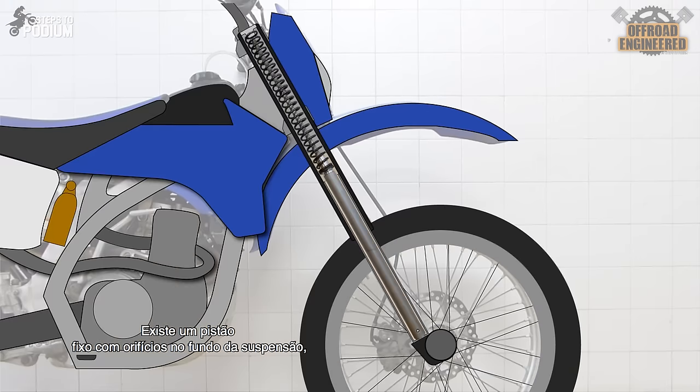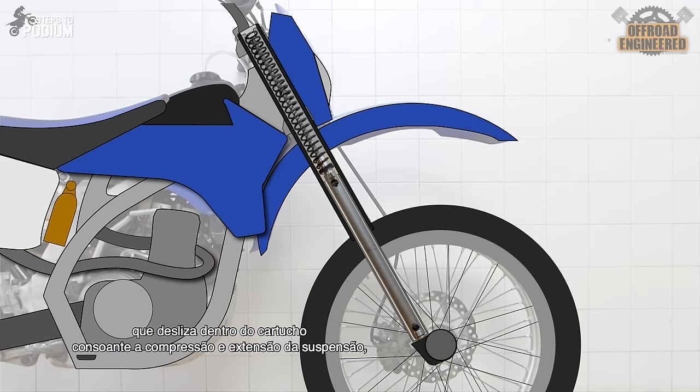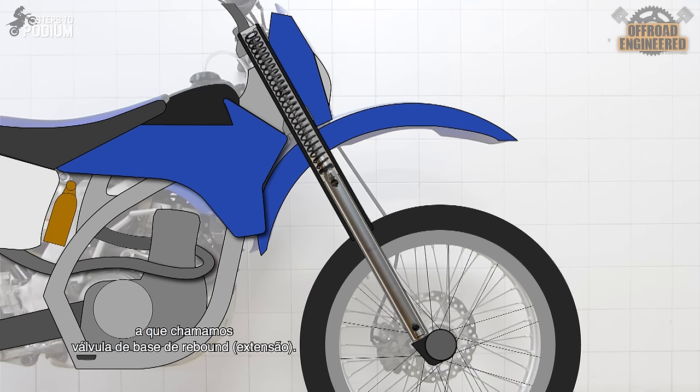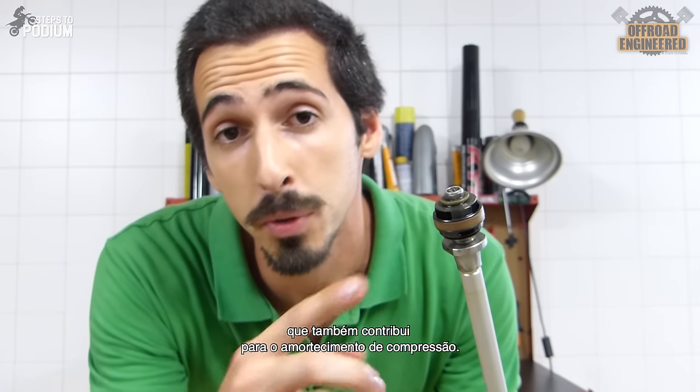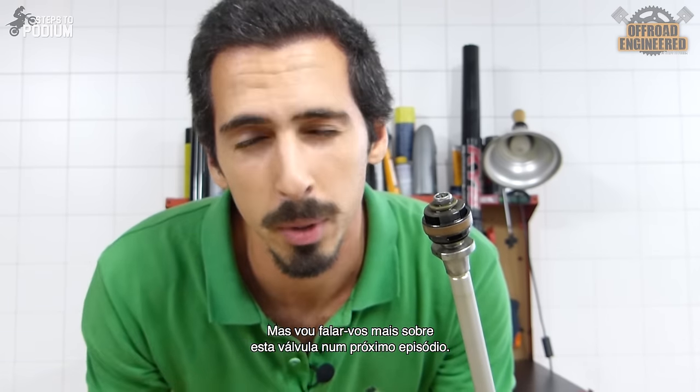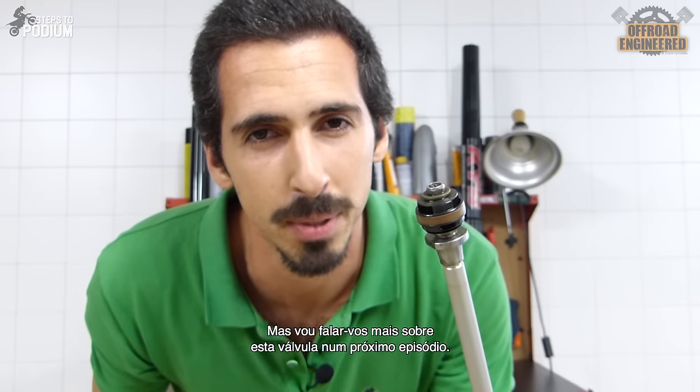There is a fixed piston with orifices positioned at the bottom, called the compression base valve, which is responsible for the compression damping. Then there is another piston with orifices that slides inside the cartridge according to the compression and extension of the suspension, called the rebound base valve. This piston also has the mid-speed valve, responsible for the mid-speed compression damping. But we'll talk more about this valve on another episode.